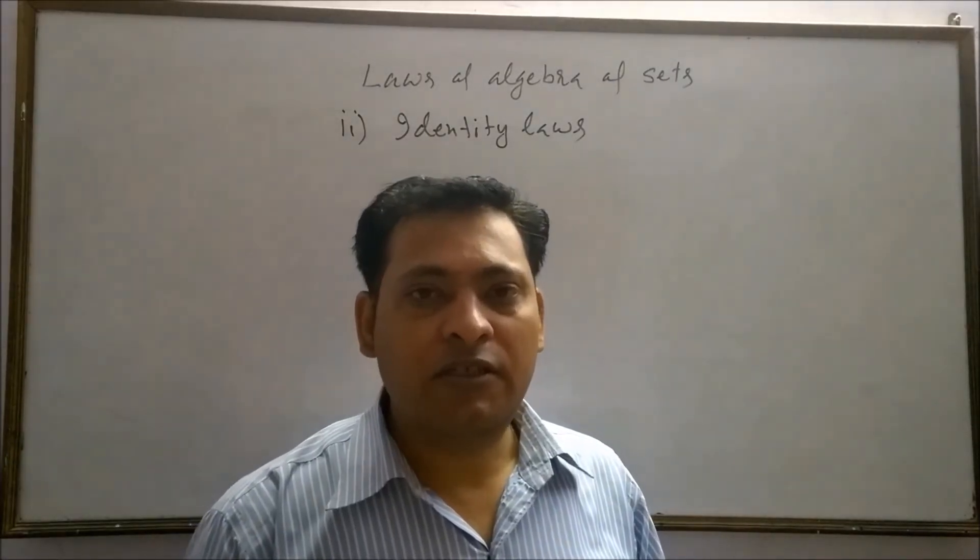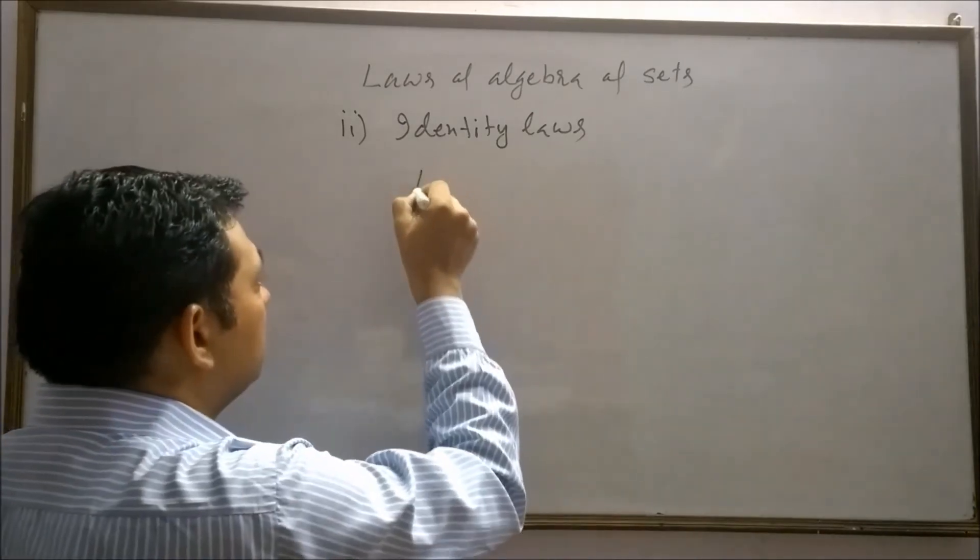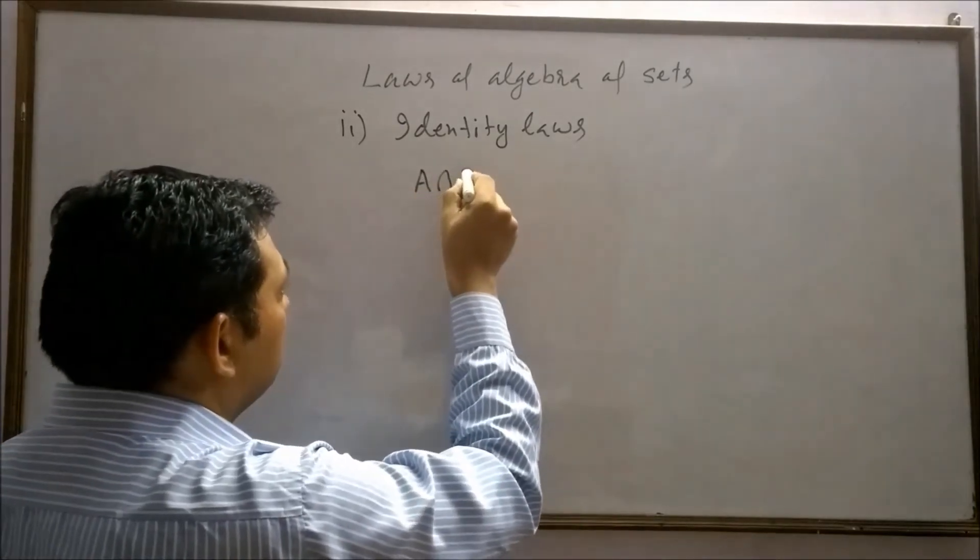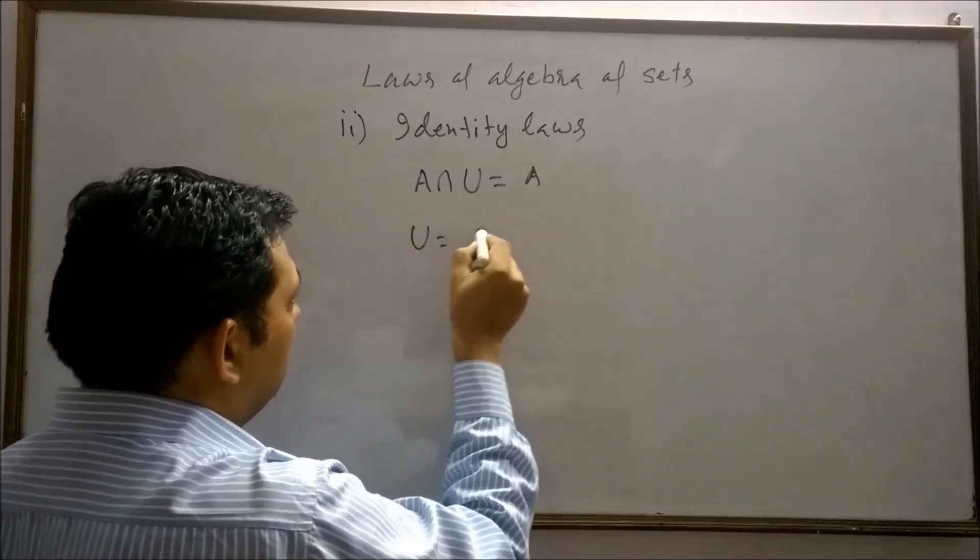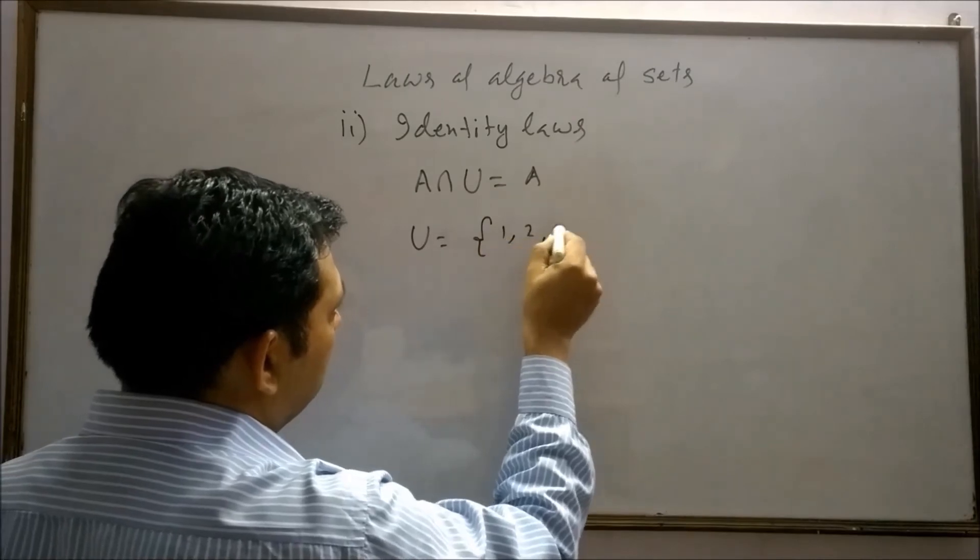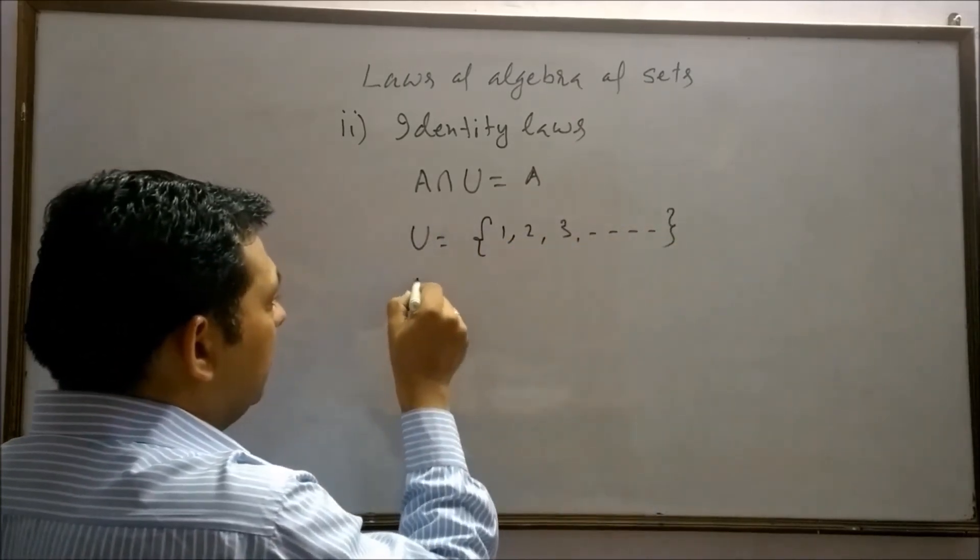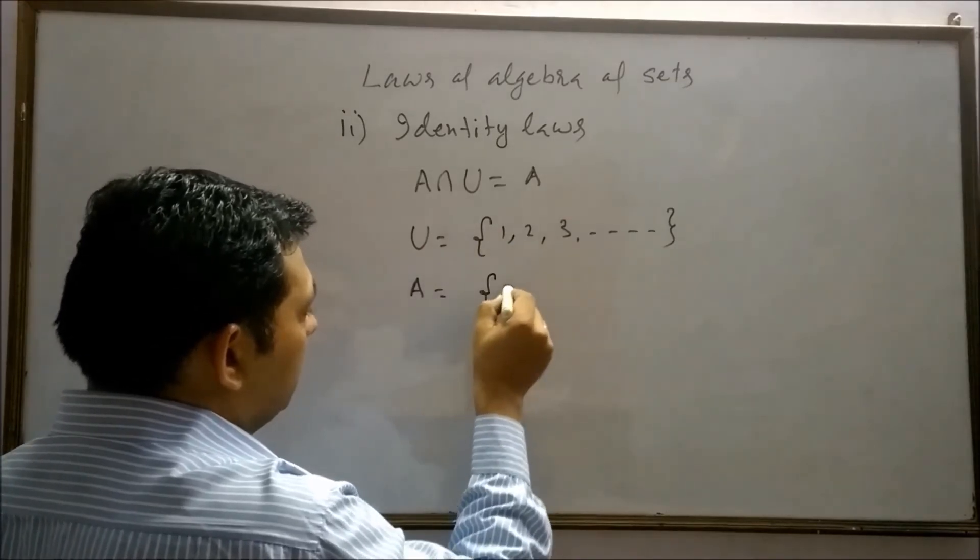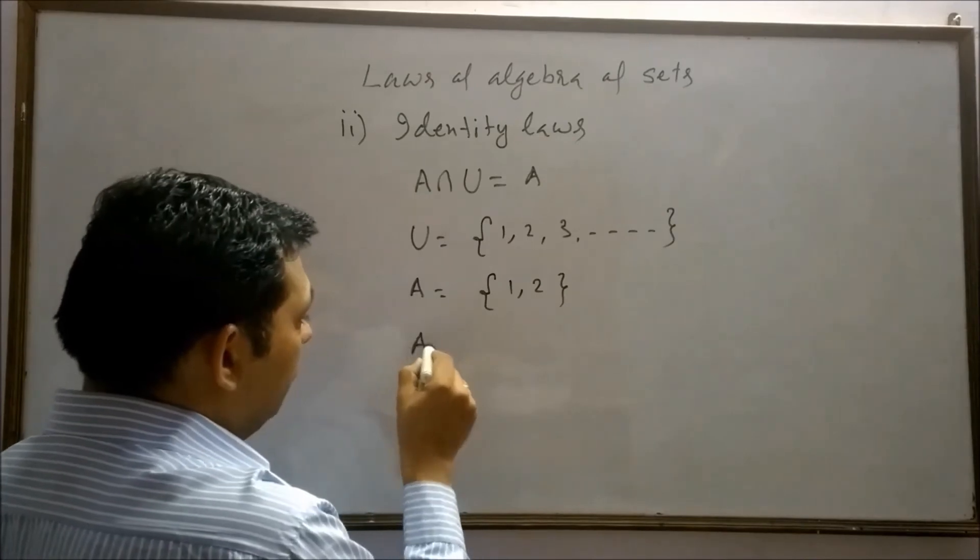Universal set is identity for intersection of sets. Let U be the natural numbers and A is {1, 2}.